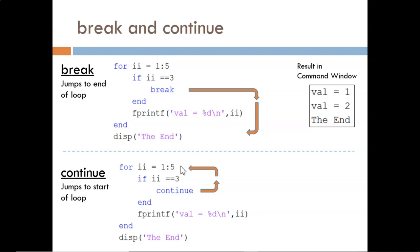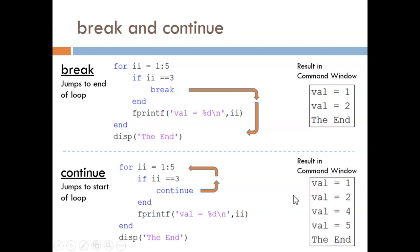Now, ii takes on the value 4, and the loop continues running. The result of this code is shown here. Notice that the sentence is printed for all of the numbers except when ii equals 3.